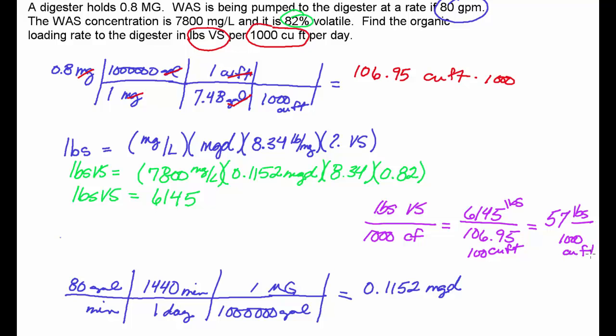A typical range for an anaerobic digester would be anywhere between 100 and maybe 350 pounds of volatiles per 1,000 cubic feet. So this is lightly loaded, but it's going to work just fine. Lightly loaded is okay.